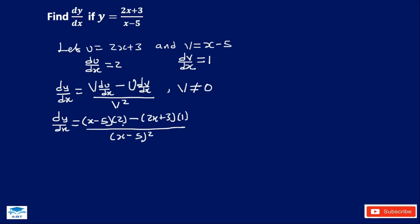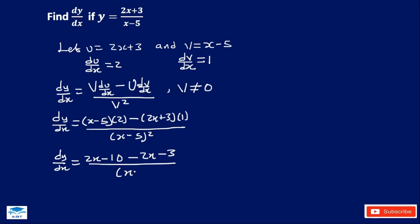We are going to expand and simplify the numerator — the denominator we normally leave as it is. So dy/dx is equal to: we expand — 2 times x is 2x, and 2 times 5 is 10. The denominator is x minus 5, squared.